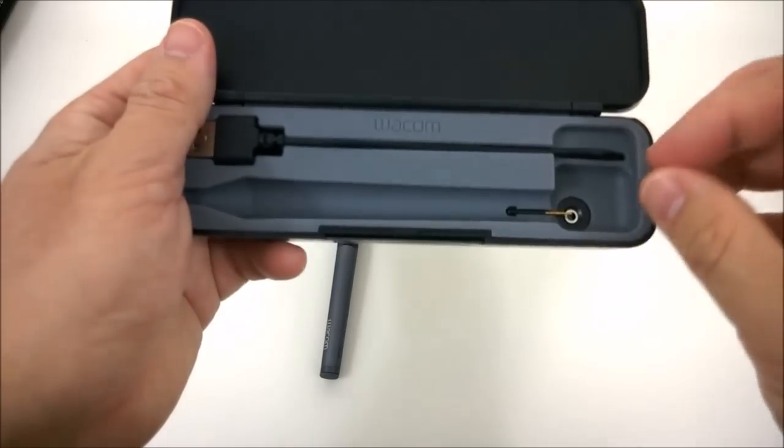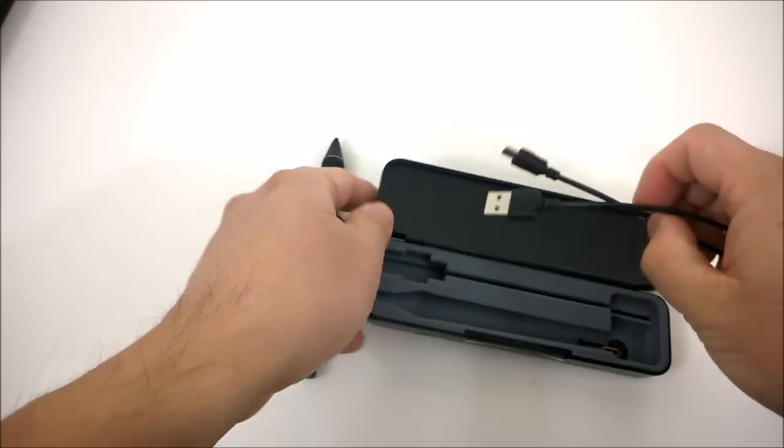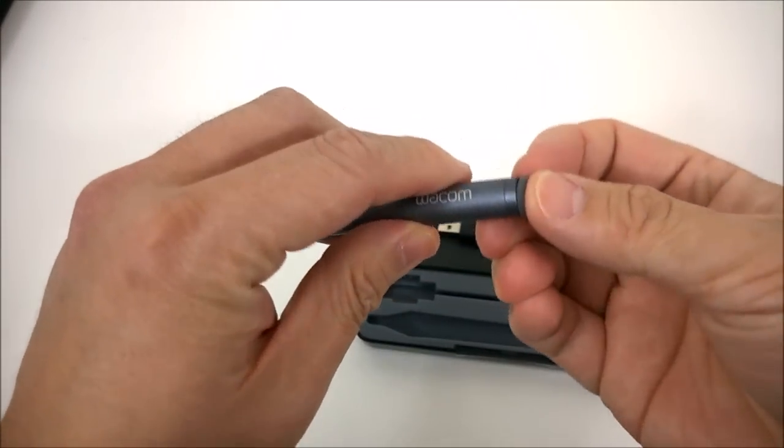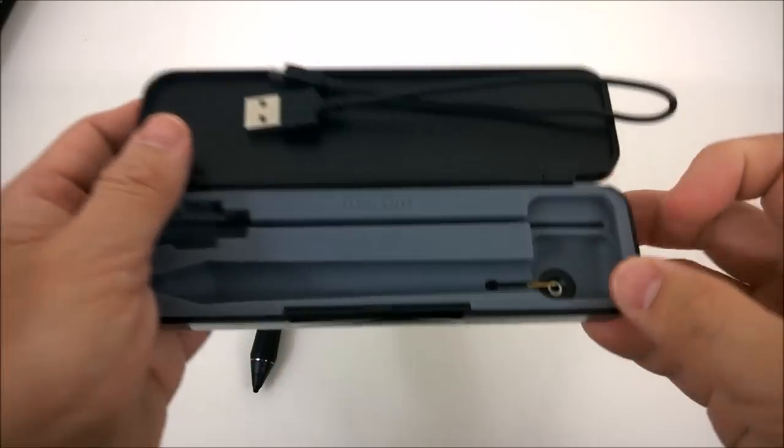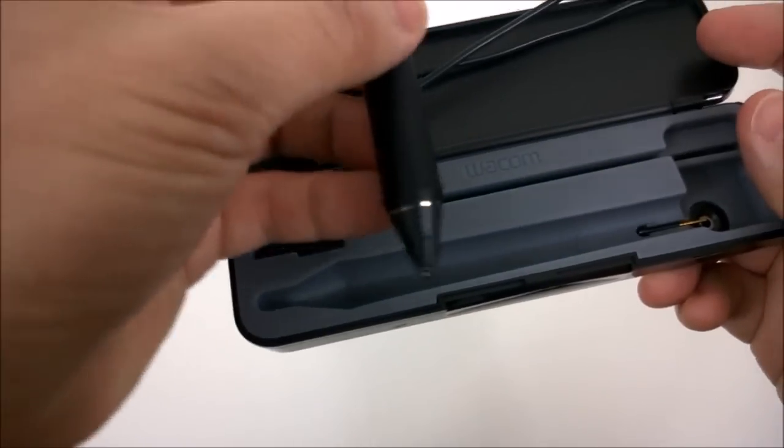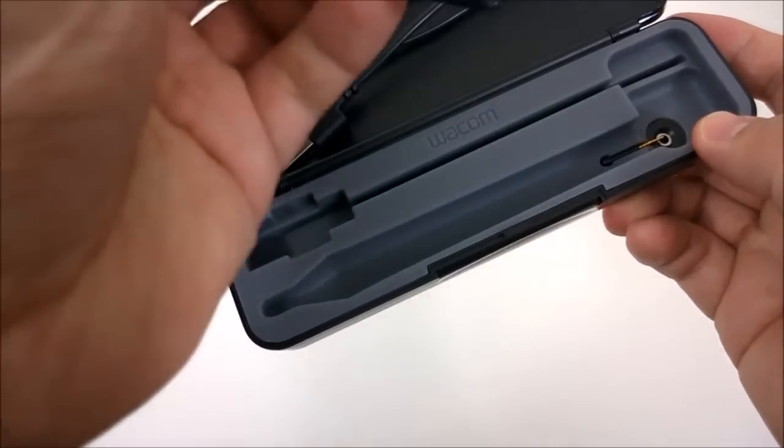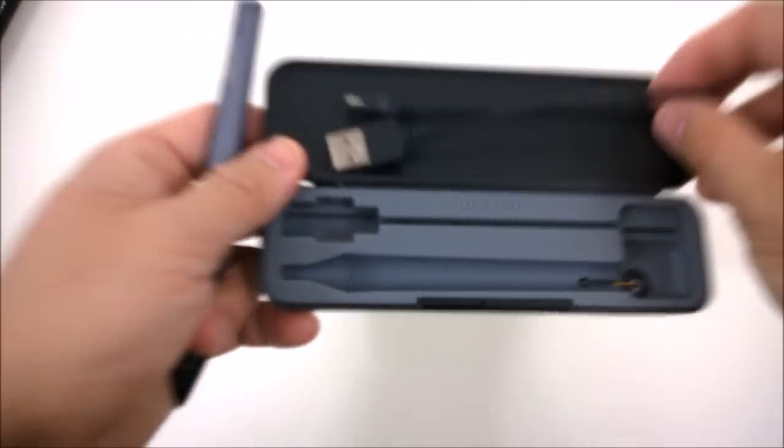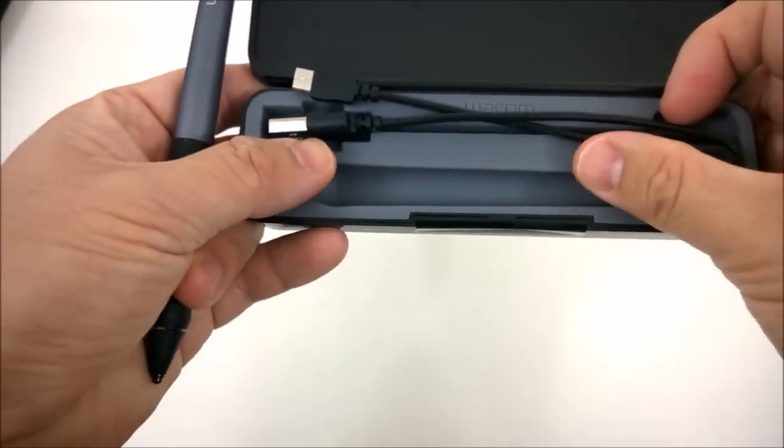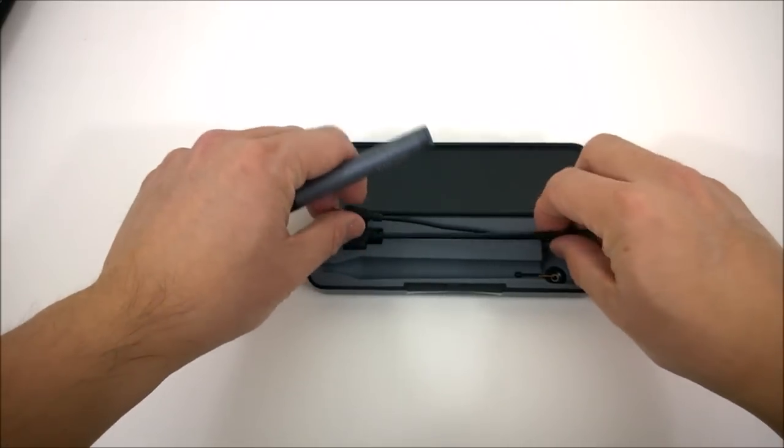Alright, inside the case, what else do we have? We have the micro USB charging cable, which basically, just like the fine line, is on the back. You also get what looks like an extra nib in here. So you can replace the nib. I'll have to look in a little more detail and see what all that is. But it looks exactly like a replacement nib for it.